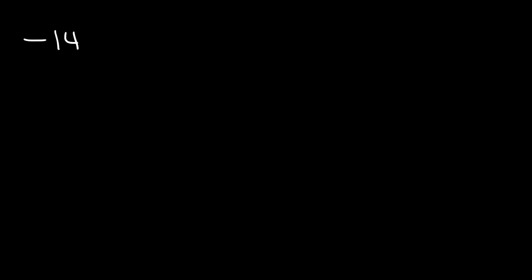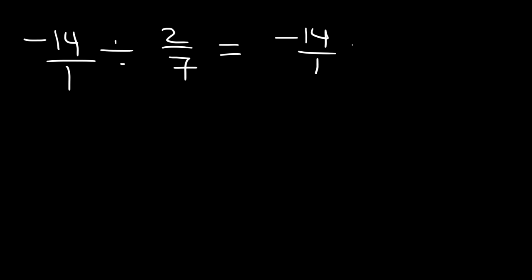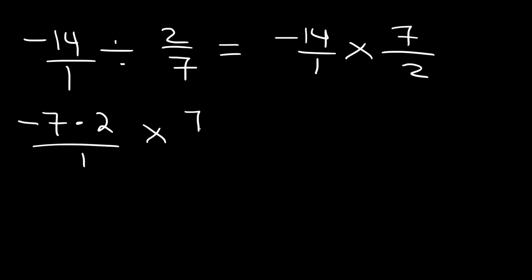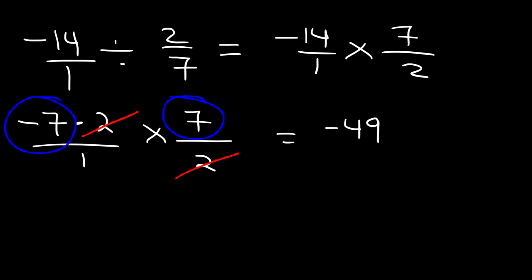Here's another one to try: divide negative 14 by 2 over 7. Put negative 14 over 1, then change division into multiplication and flip the second fraction. Write 14 as 7 times 2 so we can cancel the 2. What's left is negative 7 times 7, which is negative 49. So the answer is negative 49.